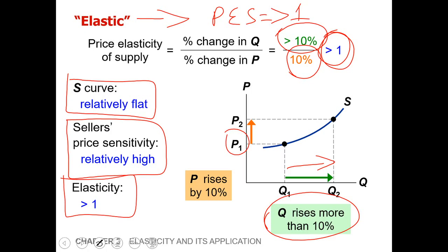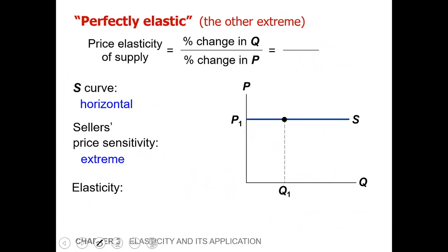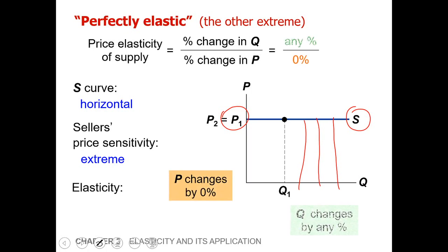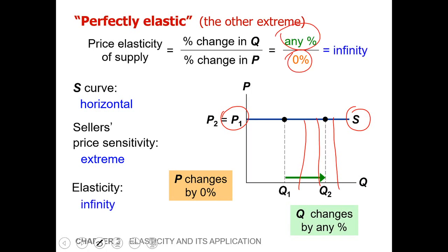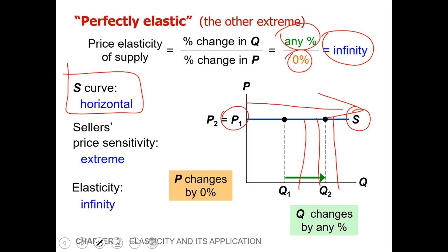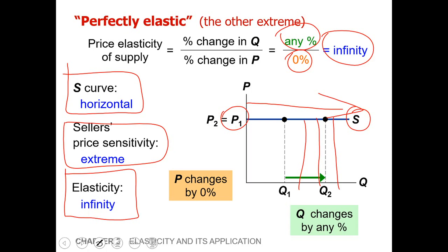Finally, the fifth case — the other extreme — is the perfectly elastic supply curve. The supply curve is perfectly horizontal. The price remains the same while quantity can increase from Q1 to Q2, Q3, Q4, or any amount — it can change by any percent. Price changes by zero percent and quantity changes by any percent, so using this in the formula we get infinity. This is the perfectly elastic supply curve, where sellers' price sensitivity is extreme and elasticity is infinity.